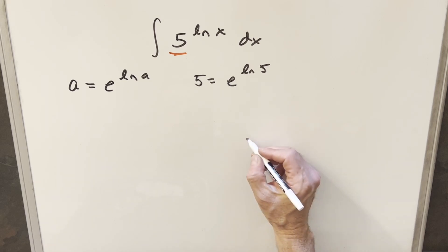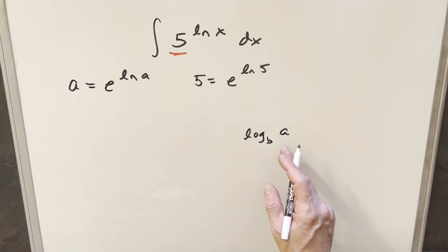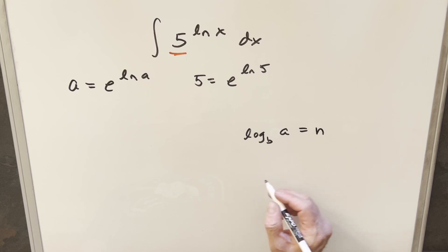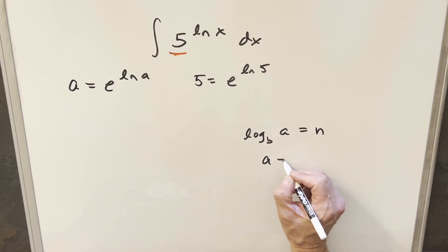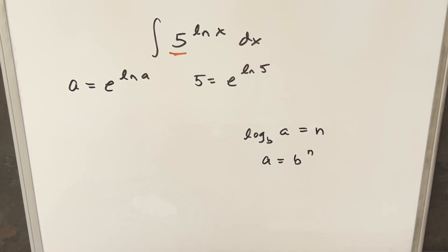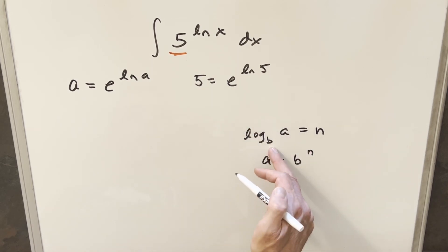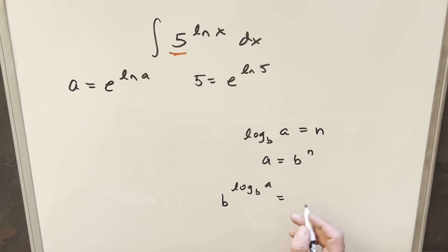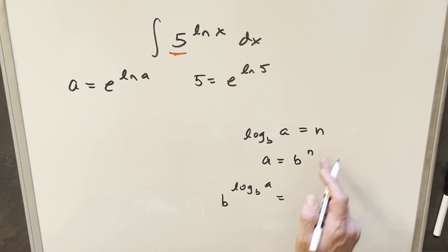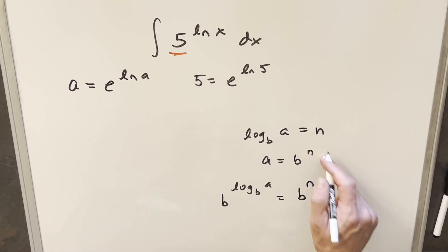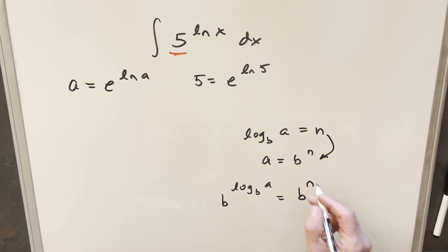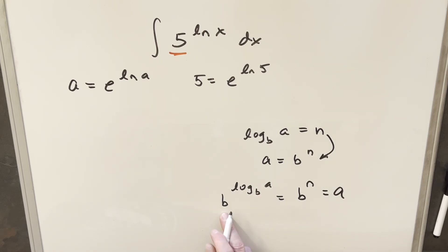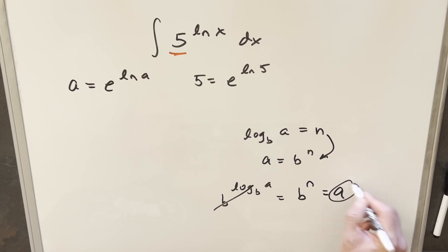The reason this works is just log properties. If we say log of some base b of a equals n, the definition tells us that a equals b to the n. When you have an expression like b to the log base b of a, we said that log base b of a is n. Using the first equation, we substitute n for the exponent and have b to the n. But we're saying that b to the n equals a, so this whole thing is a. Essentially, when you have the same base on the log and the exponent, they cancel and you just end up with a.